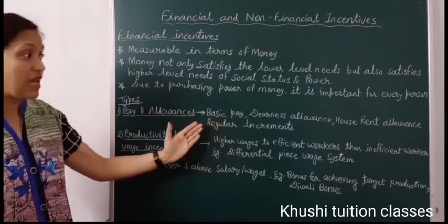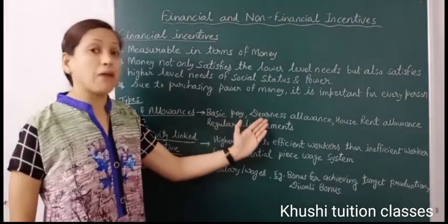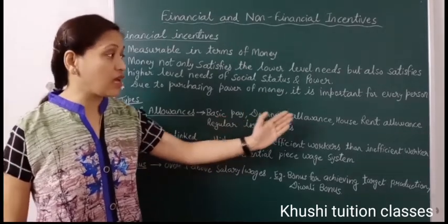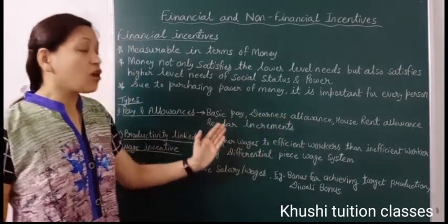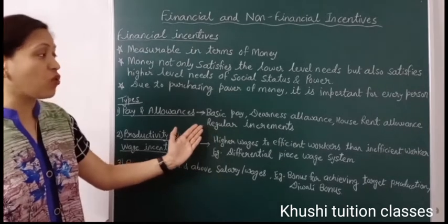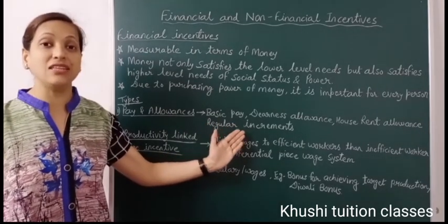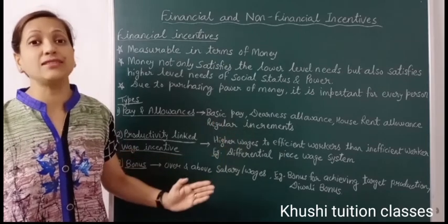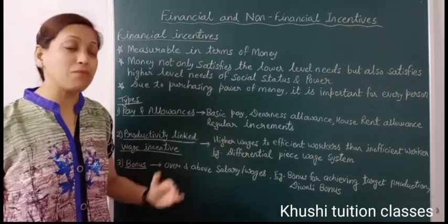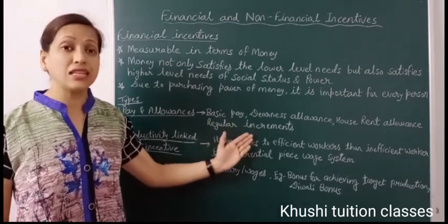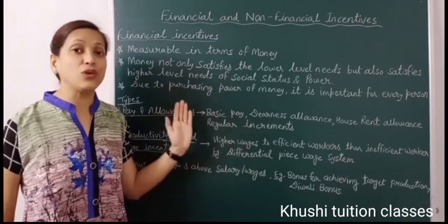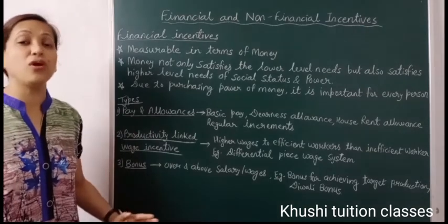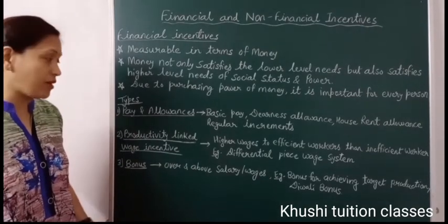dearness allowance, house rent allowance, and other allowances. Organizations give regular increments — for example, a 10% increment every year. In some organizations, increments are also given on the basis of performance. These are all included in pay and allowances, which is very important for every employee.